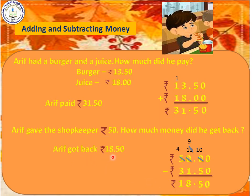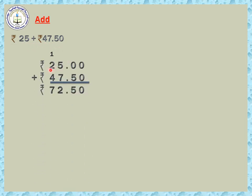Now we can solve some problems. Add: rupees 25 plus rupees 47 and 50 Paise. Arrange properly — rupees 25 has no Paise so add .00 after it, then 47.50 below. 0 plus 0 is 0, 0 plus 5 is 5 — keep the point. Then 5 plus 7 is 12 — write 2, carry 1. 2 plus 1 is 3, 3 plus 4 is 7. The answer is rupees 72 and 50 Paise.